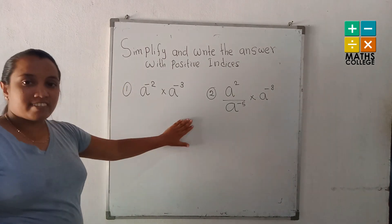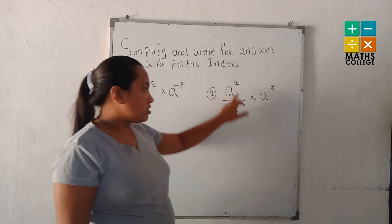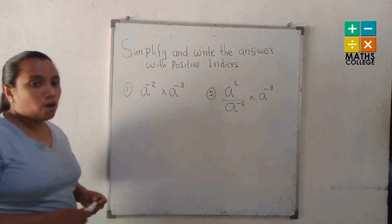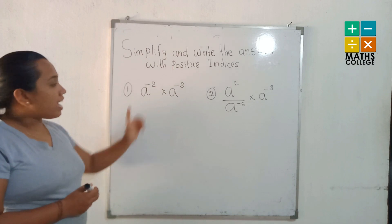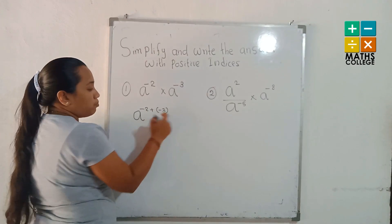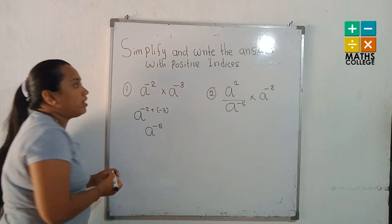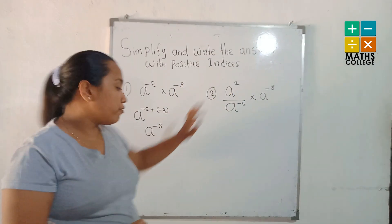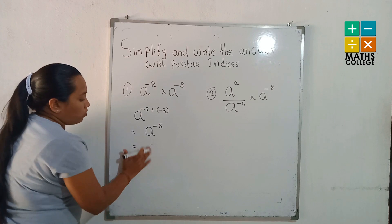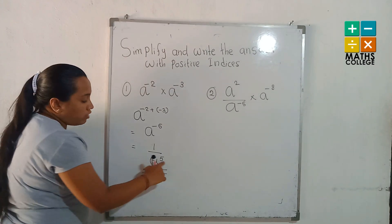Now, simplify and write the answer with positive indices. The first simplification has a product of negative indices. For the product of indices, we add the indices first: a to the power minus 2 multiplied by a to the power minus 3 gives a to the power (minus 2 plus minus 3). Minus 2 and minus 3 are the same sign, so they add to minus 5. Converting to positive indices: the answer is 1 over a to the power 5.